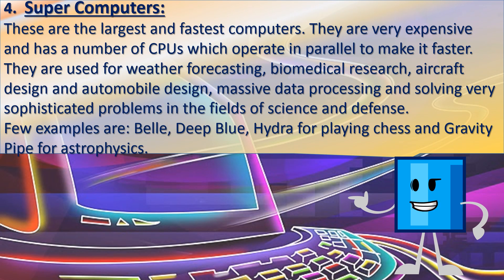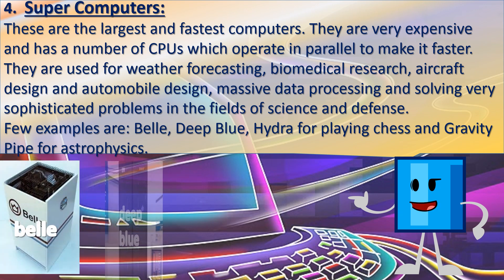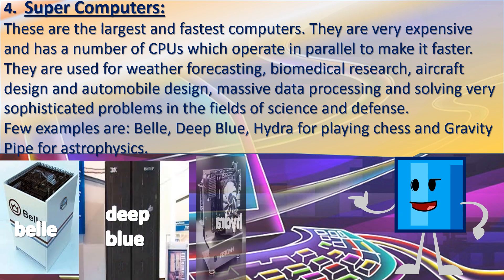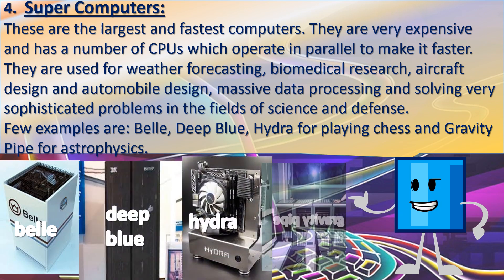4. Supercomputers. These are the largest and the fastest computers. They are very expensive and have a number of CPUs which operate in parallel to make them faster. They are used for weather forecasting, biomedical research, aircraft design, automobile design, massive data processing, and solving very sophisticated problems in the field of science and defense. Examples are Deep Blue (for playing chess) and Gravity Pipe (for astrophysics).